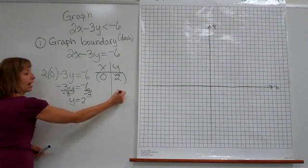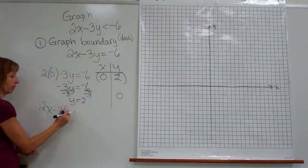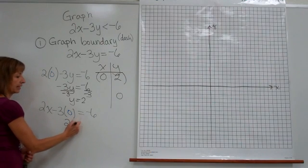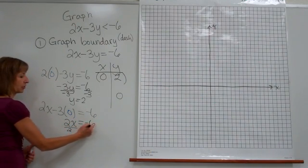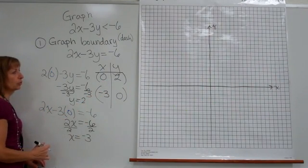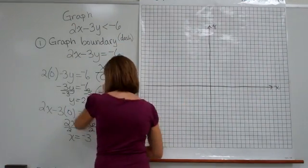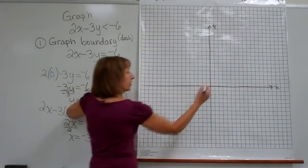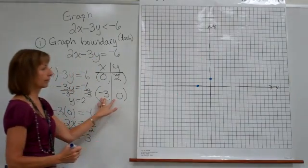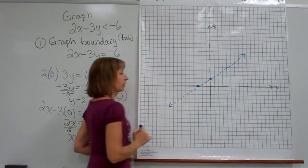Now let's put 0 in for y. Going back to the boundary equation: 2x minus 3 times 0 equals negative 6. Since 3 times 0 is 0, we get 2x equals negative 6. Dividing both sides by 2 gives x equals negative 3. So the x-intercept is (negative 3, 0). We graph both ordered pairs — (0, 2) by going up 2, and (negative 3, 0) by going left 3 — and connect them with a dashed line. That's the boundary.